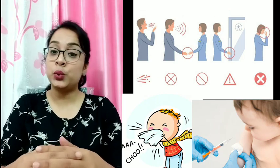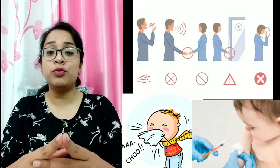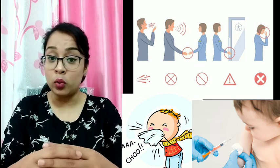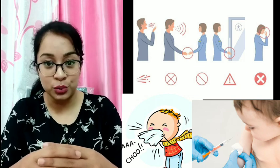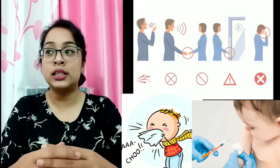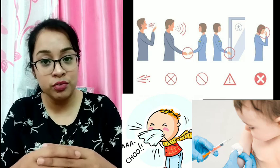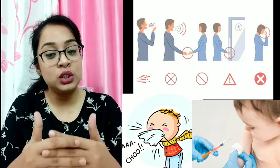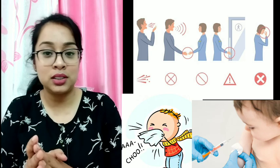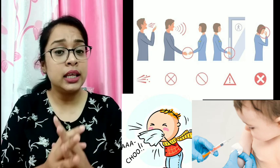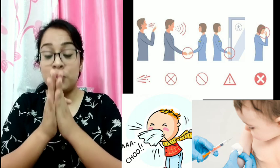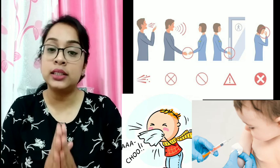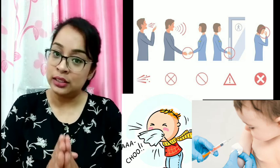How can we prevent diseases? There are different ways. First, avoid direct contact with the infected person. Nowadays we are in a lockdown situation because we don't have any medicine for this virus and germs are everywhere. If we don't come near or touch an infected person or their things, we will not get the disease. Avoiding direct contact is one of the most important prevention measures.